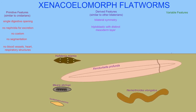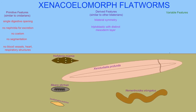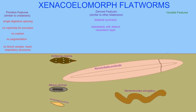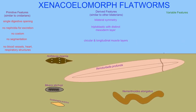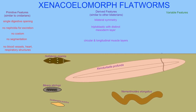such as muscle, these flatworms share a separate mesodermal layer with all other bilaterians. They have separate circular and longitudinal muscle layers, allowing them to be more versatile in their movements.